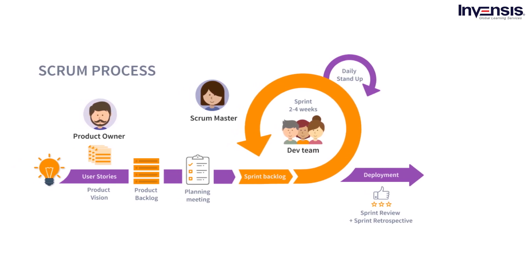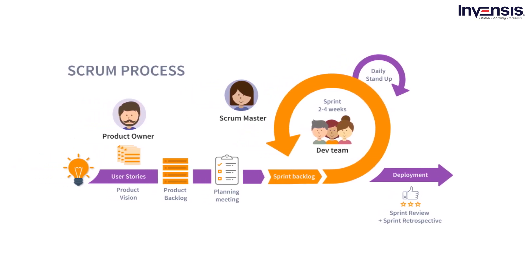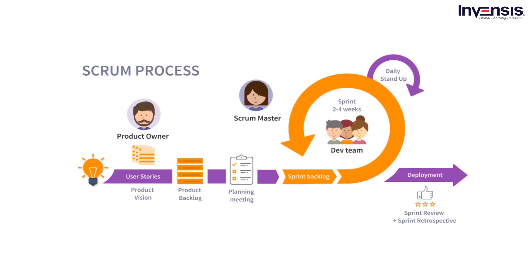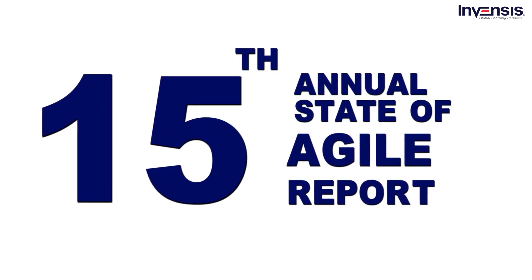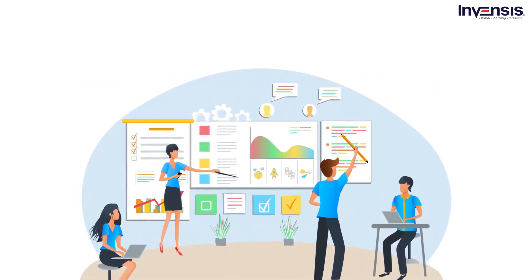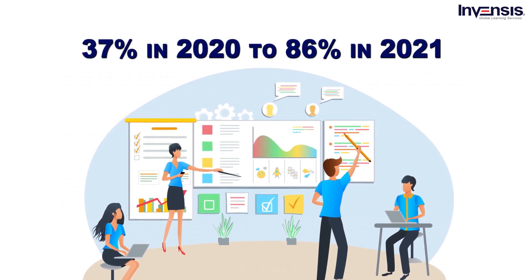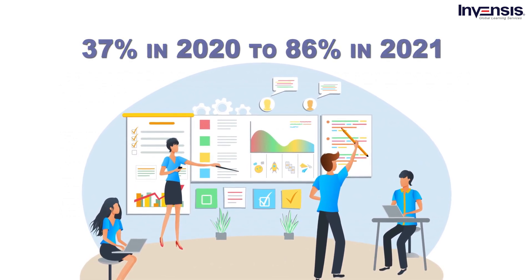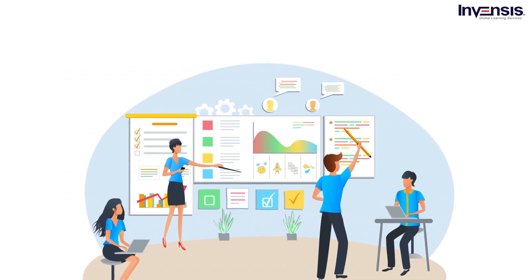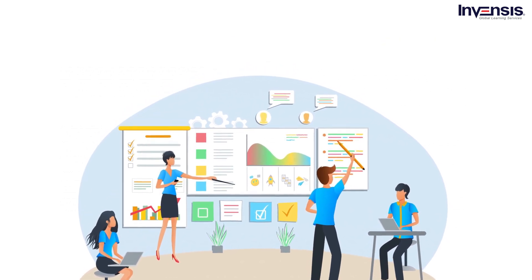Scrum is the most well-known Agile technique and is frequently used by software development teams. According to the 15th Annual State of Agile Report, the growth of Agile adoption within software development teams increased from 37% in 2020 to 86% in 2021. Scrum helps various teams work together to obtain the desired results.